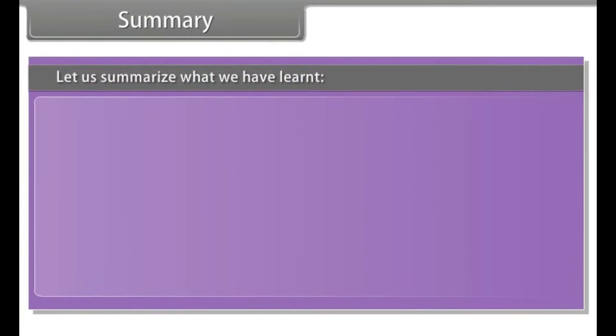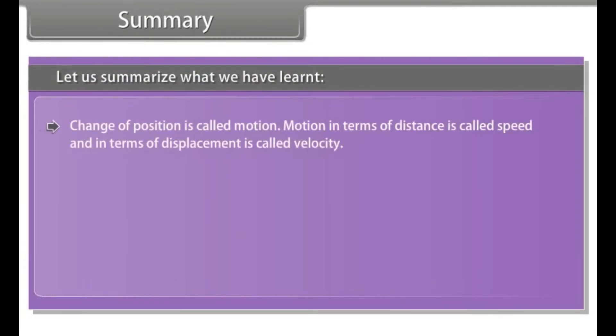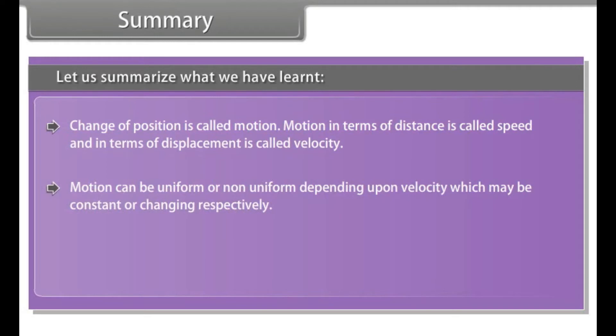Summary. Let us summarize what we have learned. Change of position is called motion. Motion in terms of distance is called speed and in terms of displacement is called velocity. Motion can be uniform or non-uniform, depending upon velocity, which may be constant or changing respectively. The rate of change of distance or displacement gives us speed or velocity respectively.